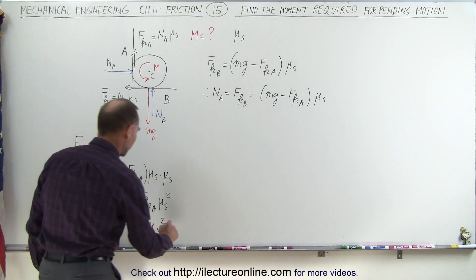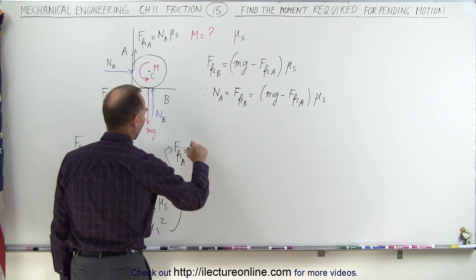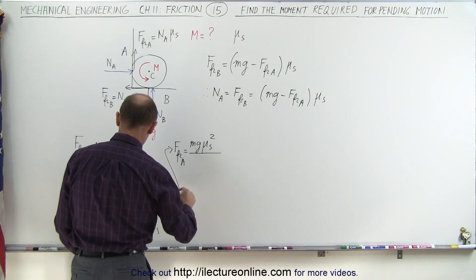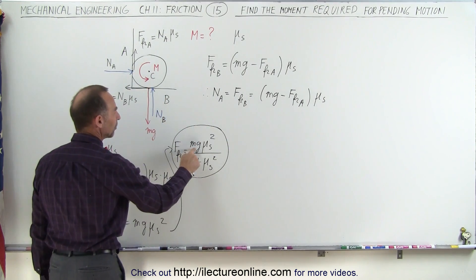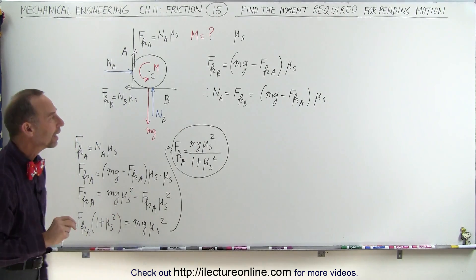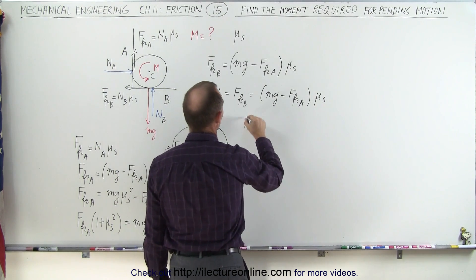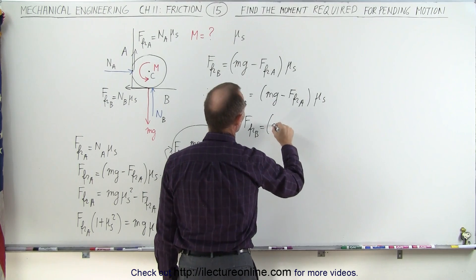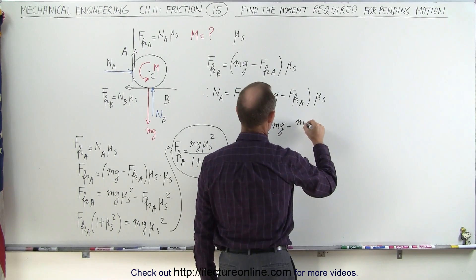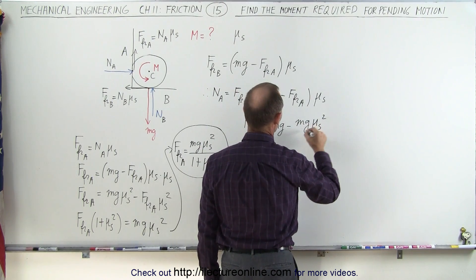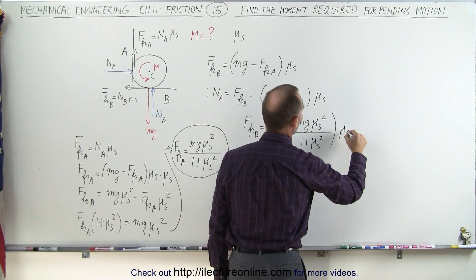And that equals mg times mu sub s squared. Finally, that means the friction force at A equals mg mu sub s squared divided by 1 plus mu sub s squared. So now we have an expression in terms of mg and mu sub s for the friction force at A, which now allows us to find the friction force at B. The friction force at B equals mg minus the friction force at A — which is mg mu sub s squared divided by 1 plus mu sub s squared — all times mu sub s.